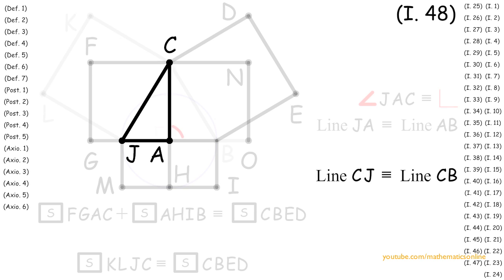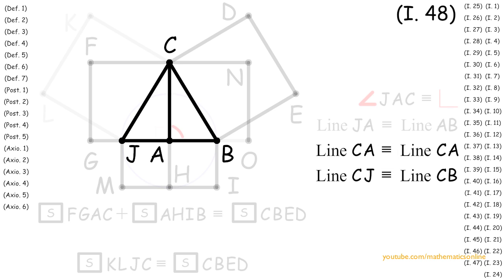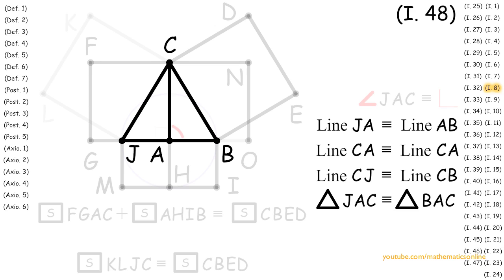Looking at triangle JAC and triangle BAC, we can see that they have a side in common — specifically, line CA is congruent to line CA. Now since both triangles have a corresponding side, side, and side, then by Proposition 8, triangle JAC is congruent to triangle BAC, and angle JAC is congruent to angle BAC.